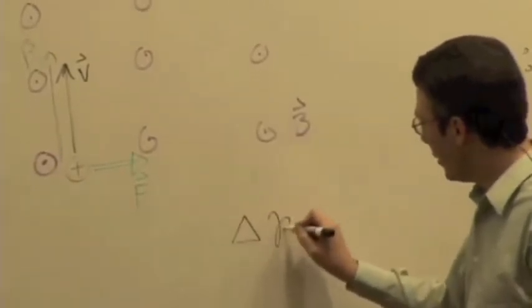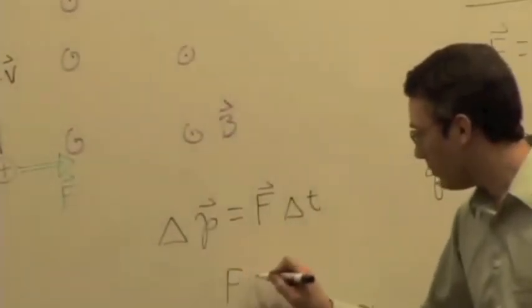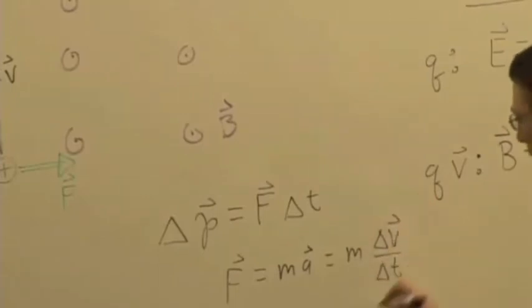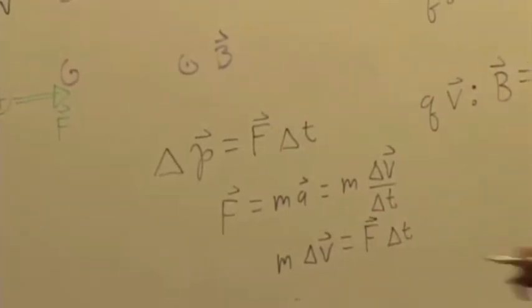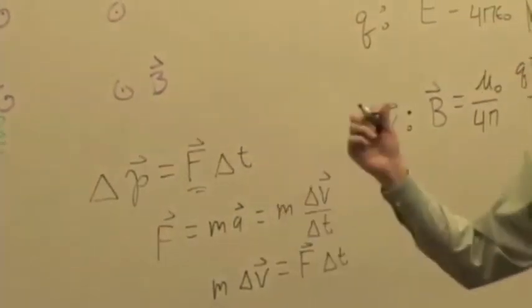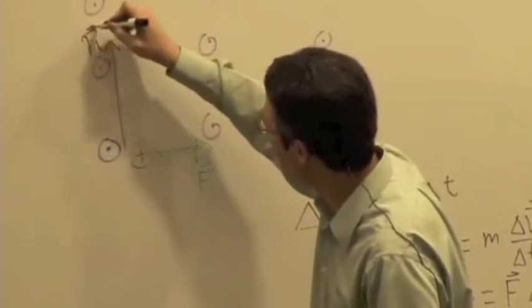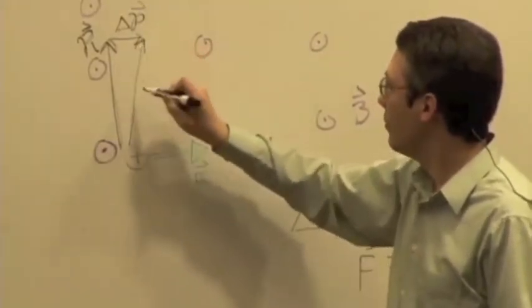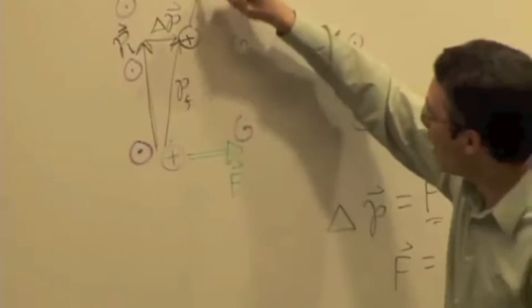If you think about change in momentum equal to force times the change in time, or force equal to mass times acceleration — that's nothing more than the change in velocity per unit time — mass times change in velocity equals force times change in time. The direction of the force is to the right, which means the change in momentum is to the right. So we've changed the direction of the moving proton. After a short time, the proton has moved and has a new direction of momentum.